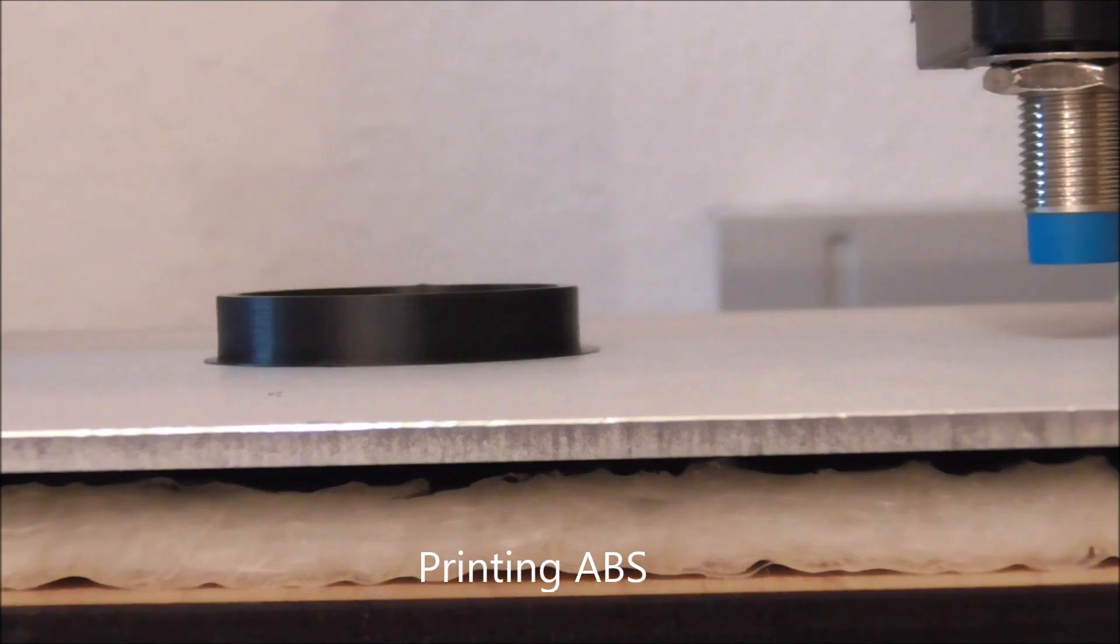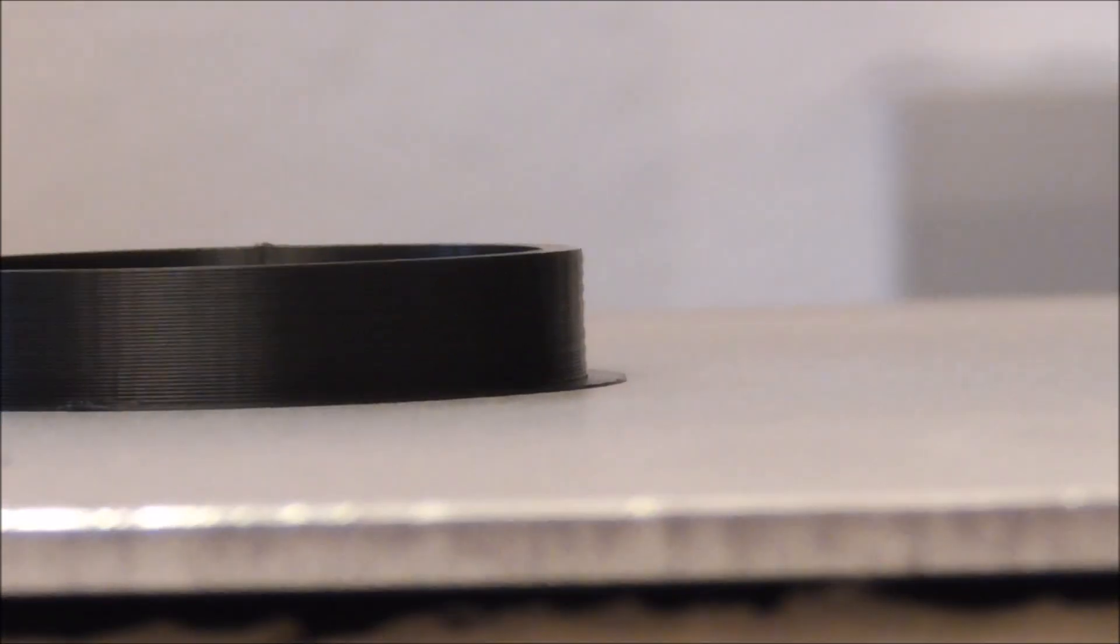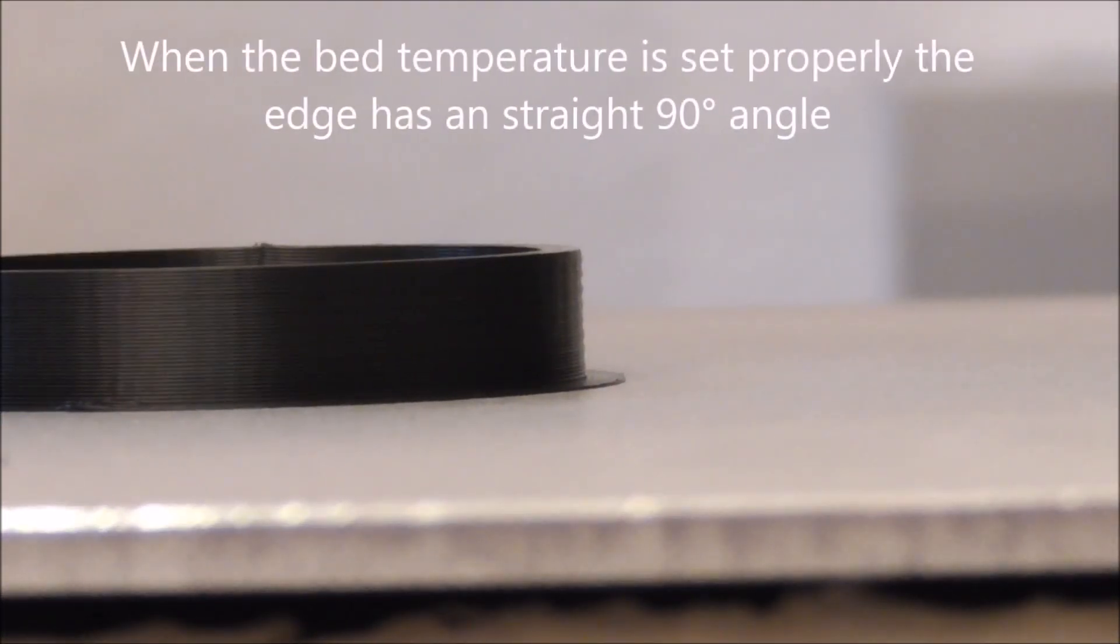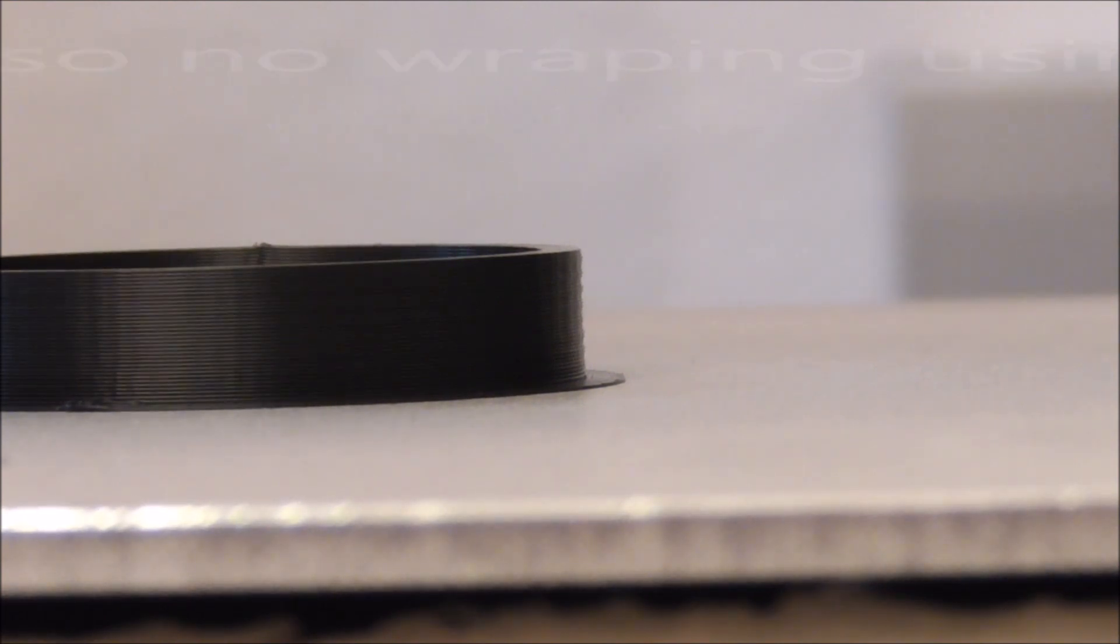And this is the outcome. If the heat bed temperature is set properly to 110 degrees Celsius for the first layer and slightly reduced for the other layers, you have a very straight 90 degree angle on the edge and also no warping.